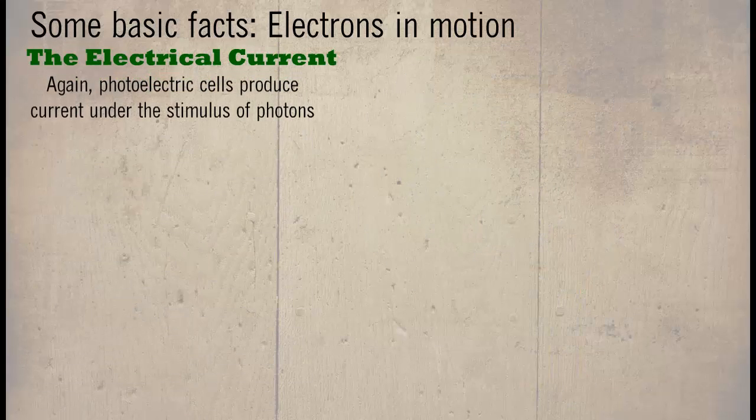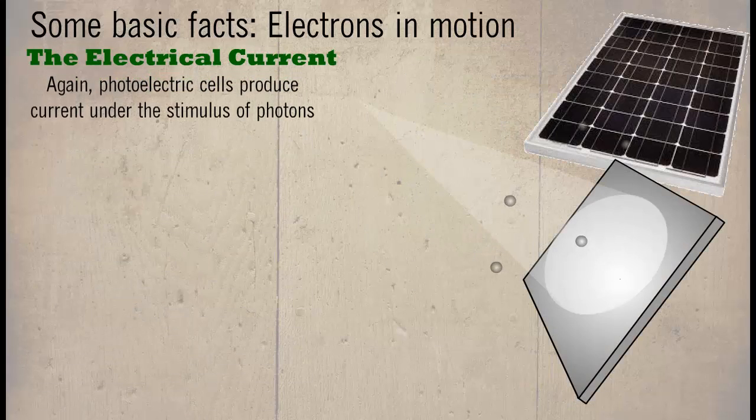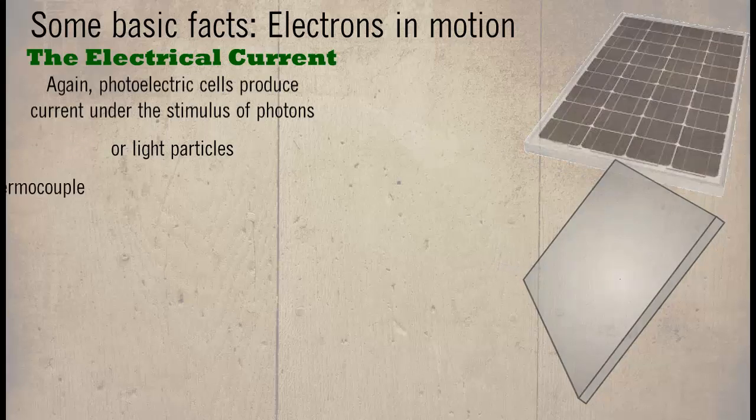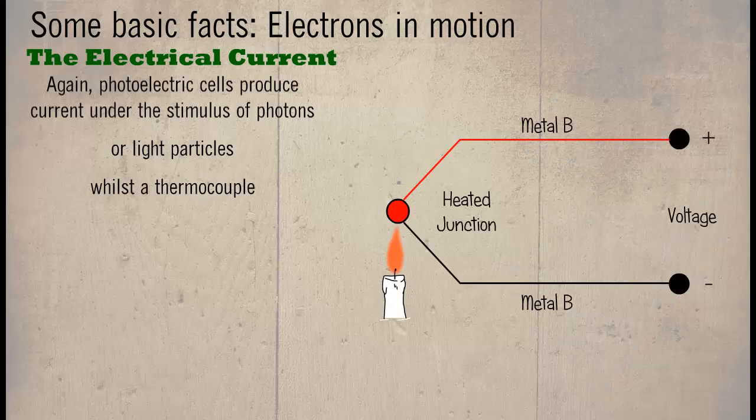Again, photoelectric cells produce current under the stimulus of photons or light particles. Whilst a thermocouple, or junction of different metals, produce current when the temperature is raised.